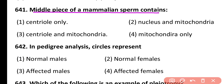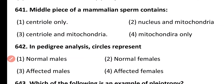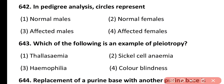Question 641. Middle piece of mammalian sperm contains: centriole only, nucleus and mitochondria, centriole and mitochondria, mitochondria only. Correct answer is option 3. The middle piece of mammalian sperm consists of axial filament as well as mitochondria.